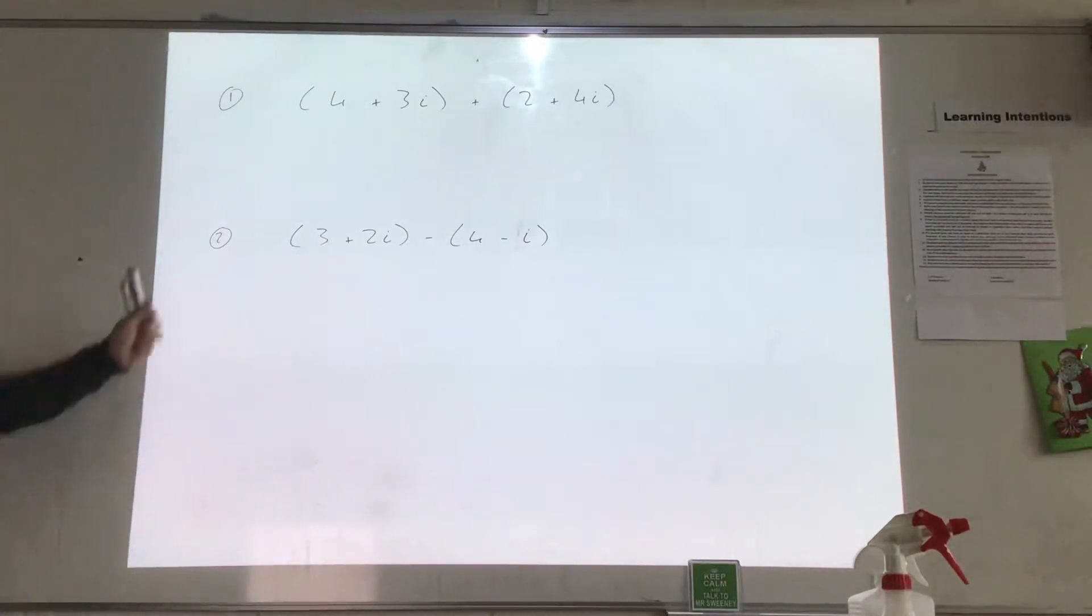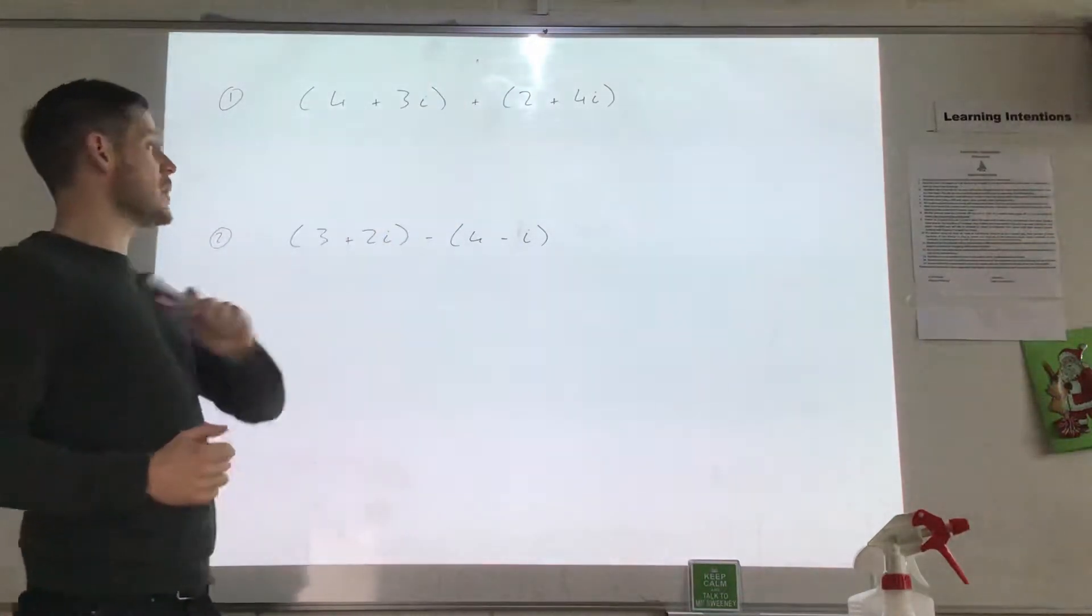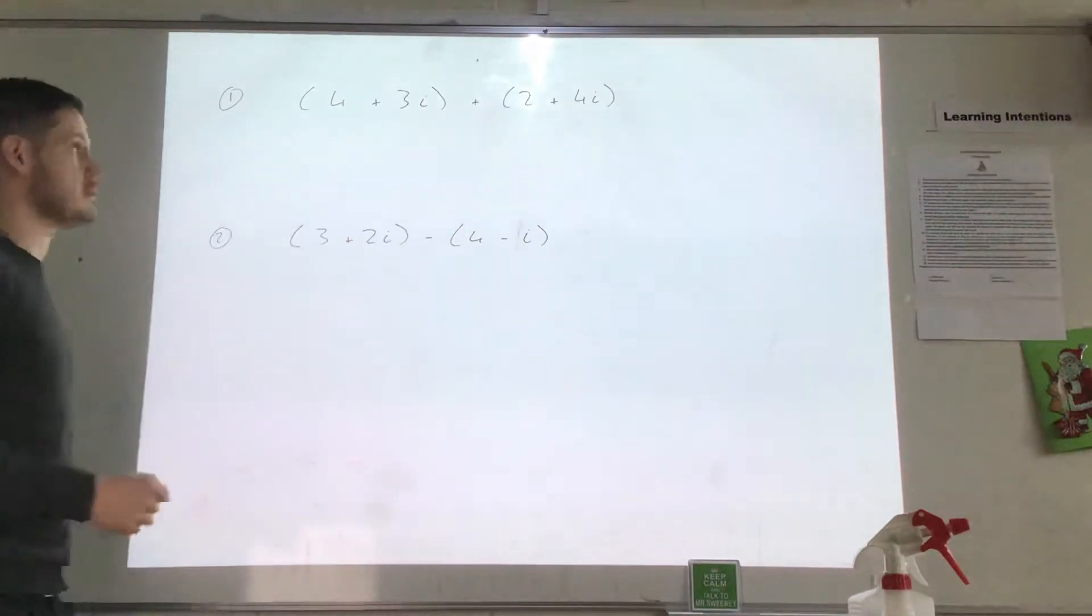So these are the two types you can have. The first type we have a plus here between them and the second type we have a minus. So the second type is a bit harder than the first so we'll start off here at the beginning.